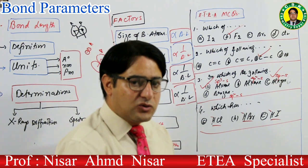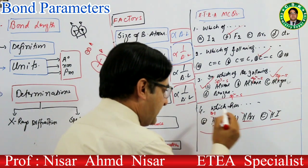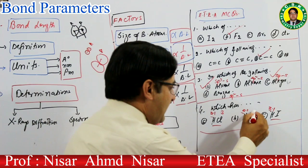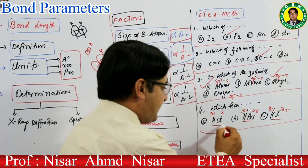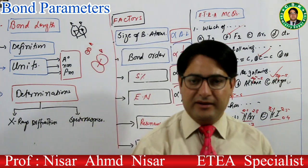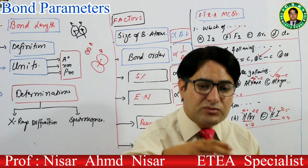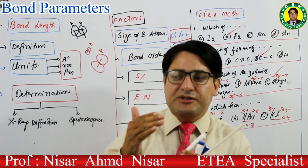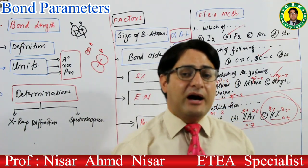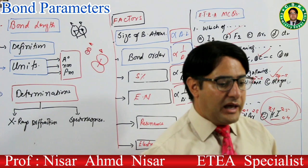اگر ایک atom same ہے — جیسے hydrogen — اور دوسرا الگ ہے، تو جس کی electronegativity کم ہوگی اس کی bond length زیادہ ہوگی کیونکہ electronegativity difference کم ہوگا۔ HI کی bond length یہاں سب سے زیادہ ہوگی کیونکہ اس میں electronegativity difference سب سے کم ہے۔